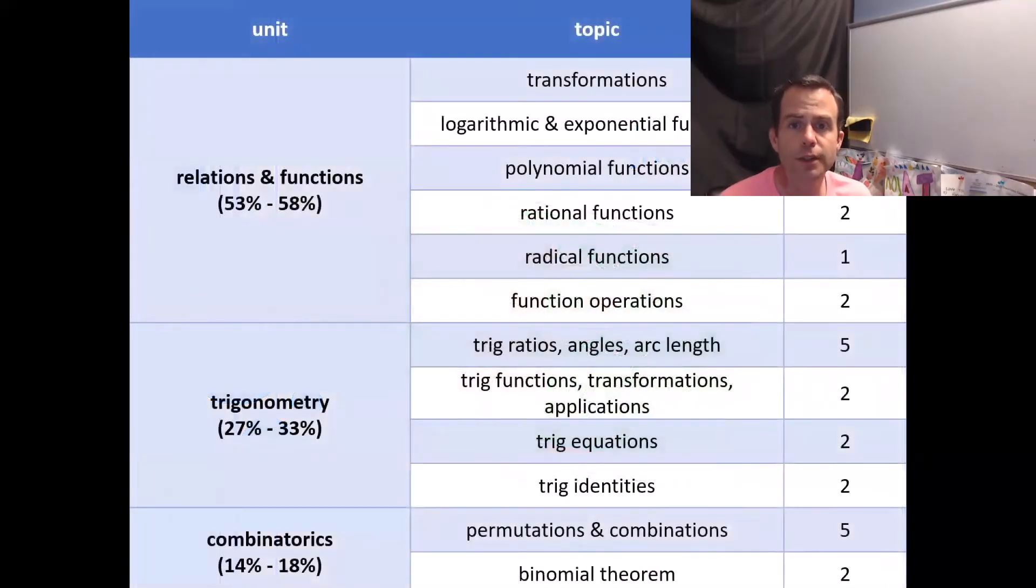So first thing we're going to do is dive into the introduction and just get to know your diploma a little bit, get to know what it's going to look like, what you should be expecting. This is just a quick breakdown of the unit and the different topics that are in there. It's somewhere around, it's close to 55% relations and functions. Now that can sound like a very daunting number until you look at what all the topics of relations and functions are.